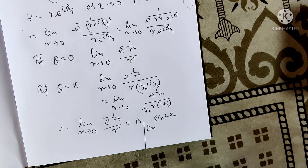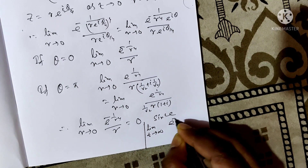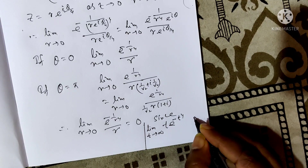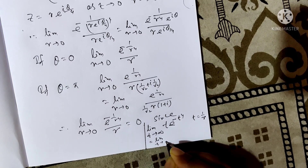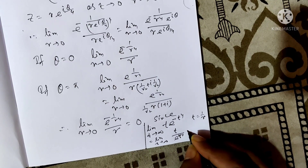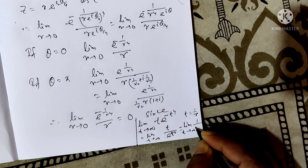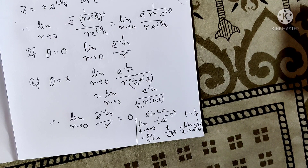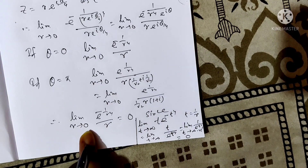Since limit as t→∞ of e^(-t⁴) / (1/t) = limit as t→∞ of t / e^(t⁴) = limit as t→∞ of 1 / (e^(t⁴) · 4t³) = 0. Therefore limit as r→0 of e^(-1/r⁴) / r = 0.